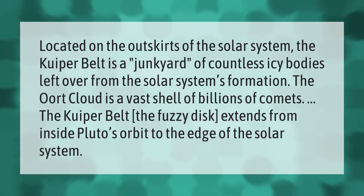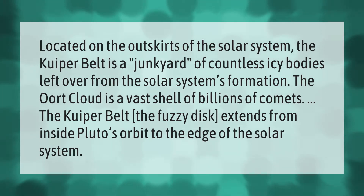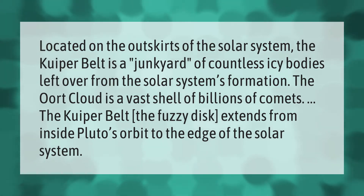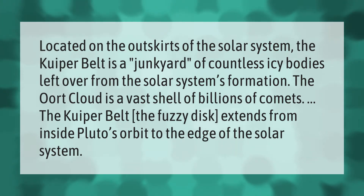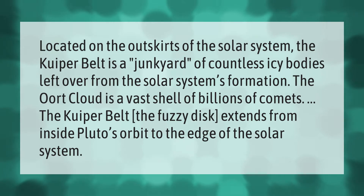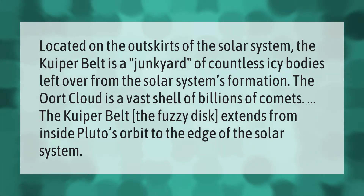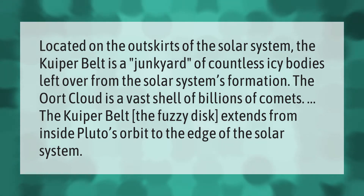Located on the outskirts of the solar system, the Kuiper Belt is a junkyard of countless icy bodies left over from the solar system's formation. The Oort Cloud is a vast shell of billions of comets. The Kuiper Belt, a fuzzy disk, extends from inside Pluto's orbit to the edge of the solar system.